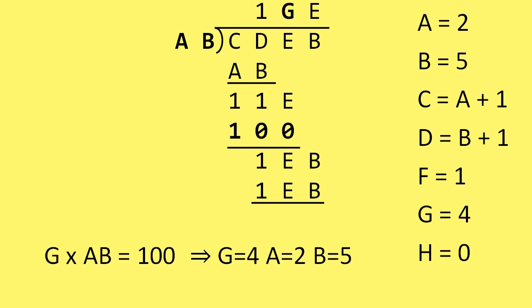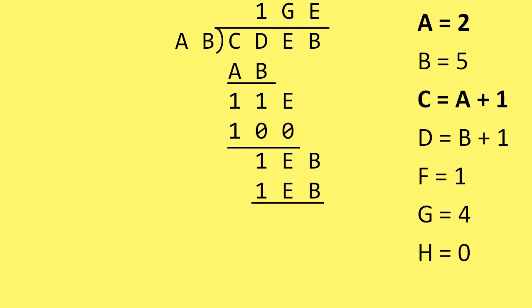We can now also fill in other values related to A and B that we didn't know before. C is A plus 1, so now we can record C as 2 plus 1, which is 3. And D is equal to B plus 1. B is 5, so D must be 6.